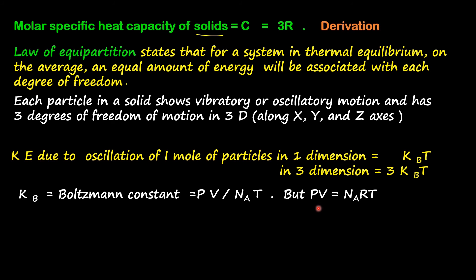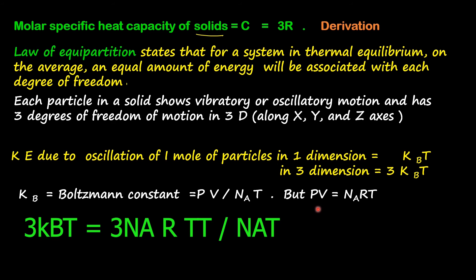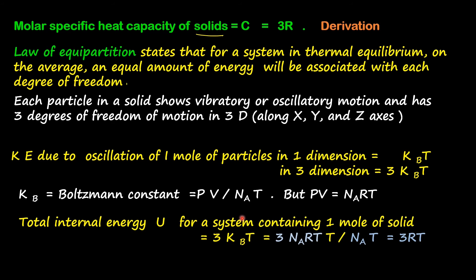We know PV equals NRT, but here considering one mole, we write PV equals NA·R·T. Substituting for PV, the total internal energy 3KB·T equals 3NA·R·T divided by NA·T, multiplied by T. On simplification, the delta T terms cancel and what remains is 3RT. We have derived that the internal energy of one mole of a solid equals 3RT.